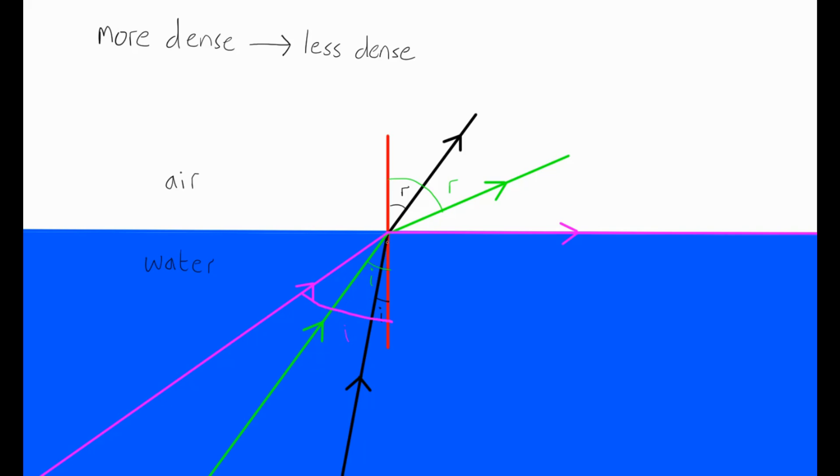But very interestingly, we've made it so large that the angle of refraction, you can see the ray of light coming out like this, the angle of refraction is, in fact, 90 degrees. This is what we call the critical angle. The critical angle is simply the angle of incidence that gives us an angle of refraction of 90 degrees.